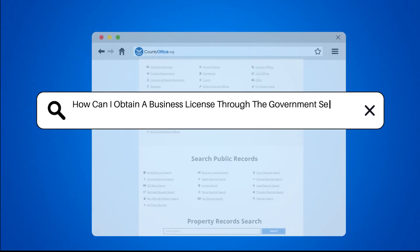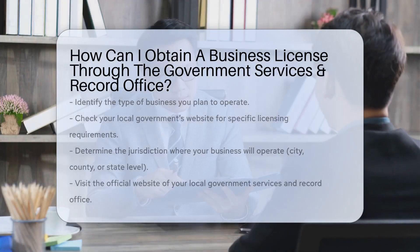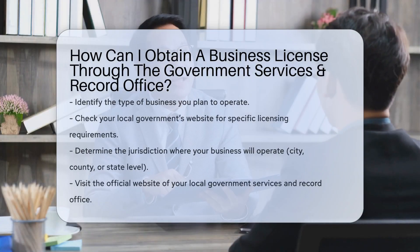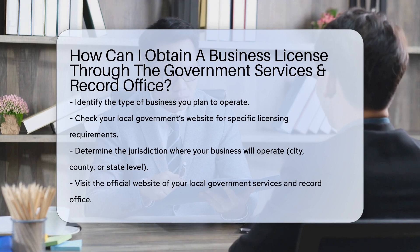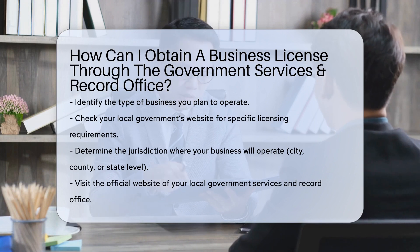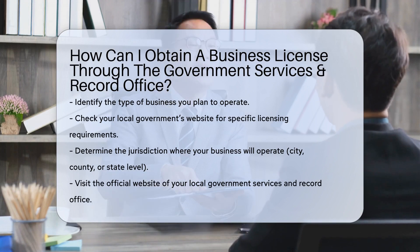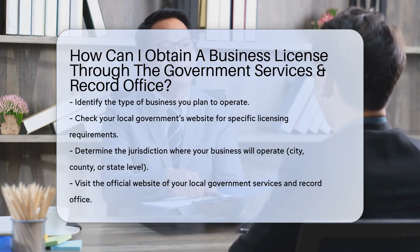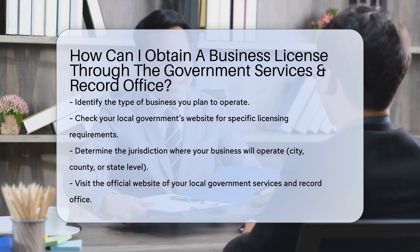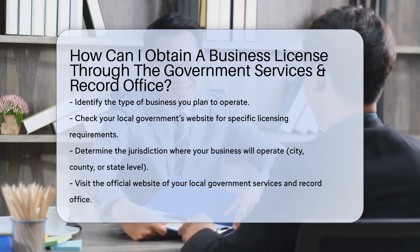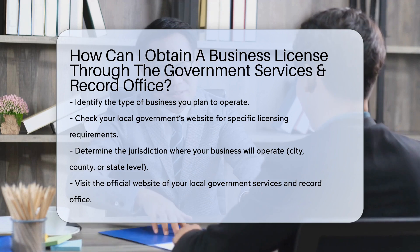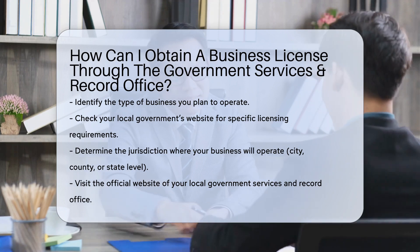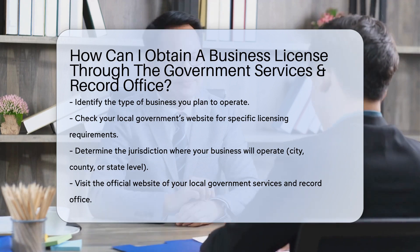How can I obtain a business license through the Government Services and Record Office? First, identify the type of business you plan to operate. Different businesses may require specific licenses or permits. Check your local government's website for specific requirements.